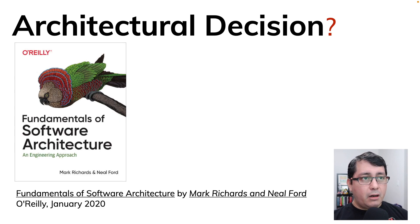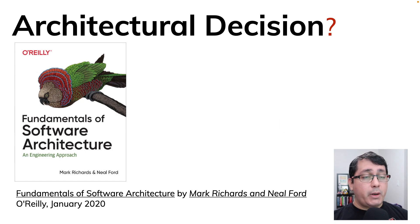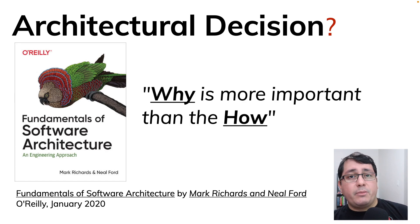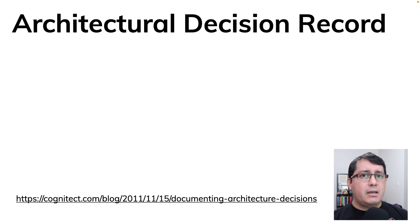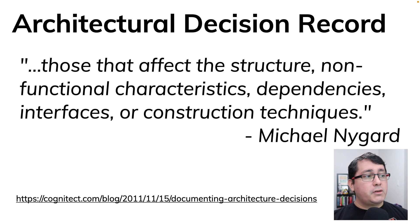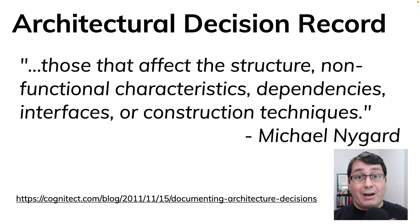Neil Ford and Mark Richards wrote a book called Fundamentals of Software Architecture, which I highly recommend. It's published by O'Reilly and was published in 2020. They introduced this concept of architectural design records, describing why those are more important than how they are implemented. This is based on an idea from Michael Nygard, who said he would like to keep a collection of records for architecturally significant decisions that affect the structure, non-functional characteristics, dependencies, interfaces, or construction techniques.